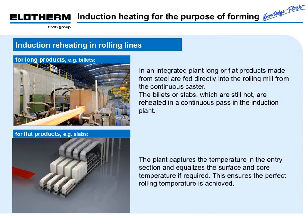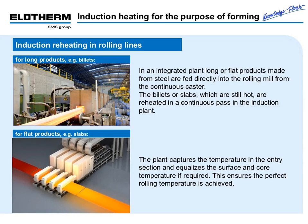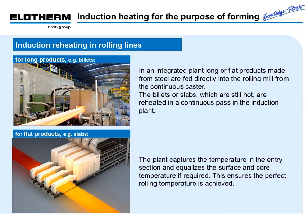Example 2: Induction reheating in rolling lines. Long or flat products made from steel can be fed in an integrated plant directly into the rolling mill from the continuous caster. The billets or slabs, which are still hot, are reheated in a continuous pass in the induction plant. The plant captures the temperature in the entry section and equalizes the surface and core temperature if required, ensuring the perfect rolling temperature is achieved.